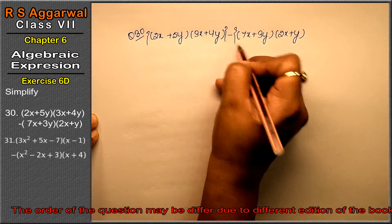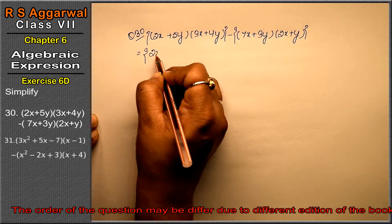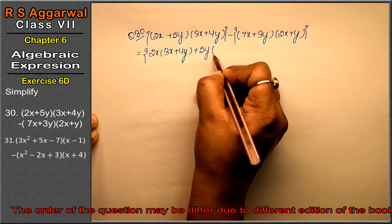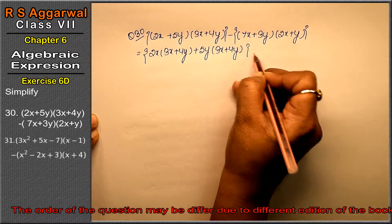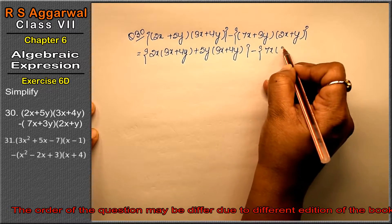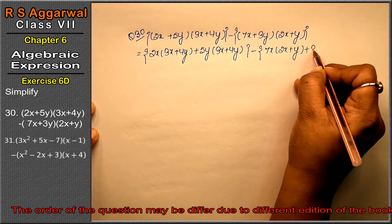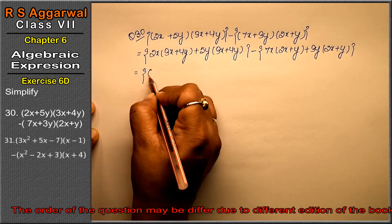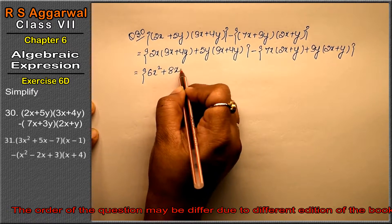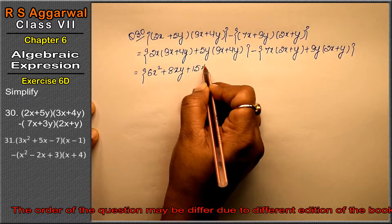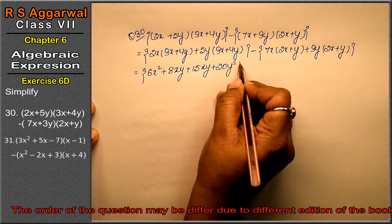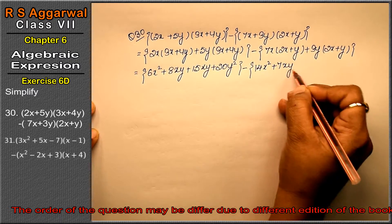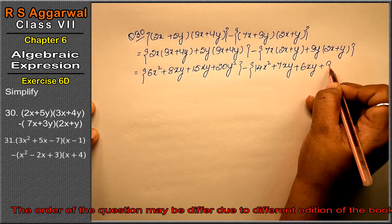Middle bracket lagaya. Expanding: 2x multiply (3x + 4y) plus 5y multiply (3x + 4y) minus 7x multiply (2x + y) plus 3y multiply (2x + y). So we get 6x square plus 8xy plus 15xy plus 20y square minus 14x square minus 7xy plus 6xy plus 3y square.